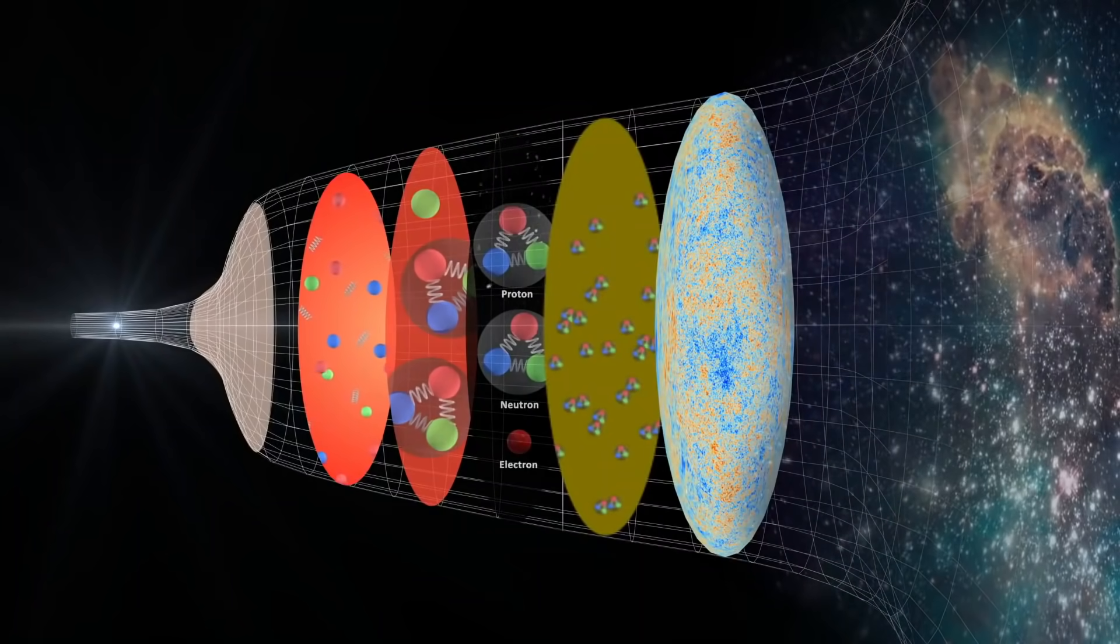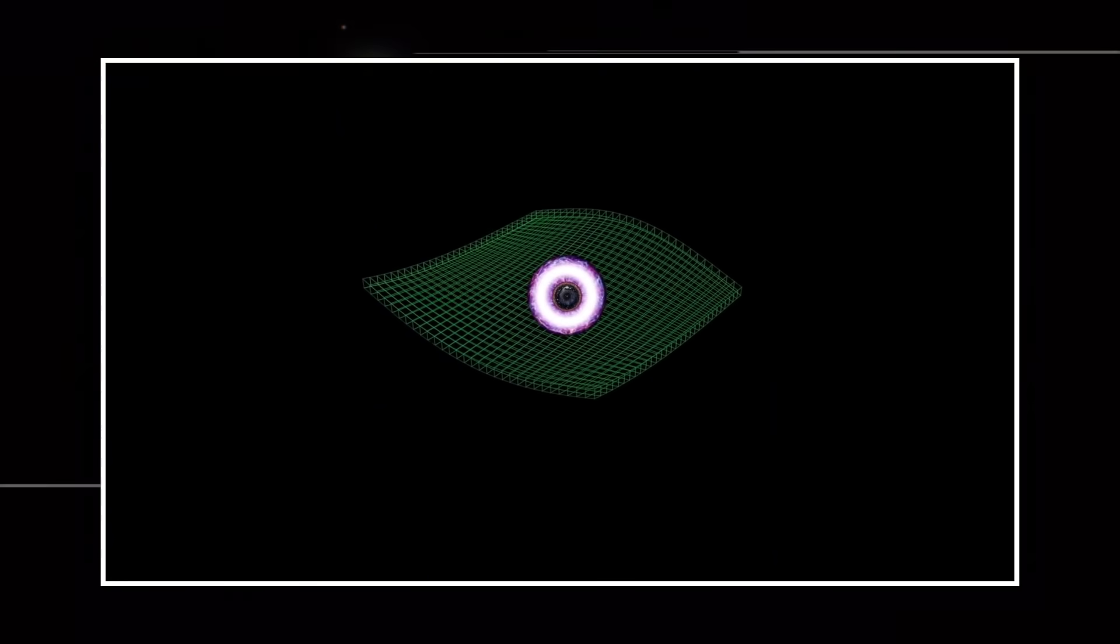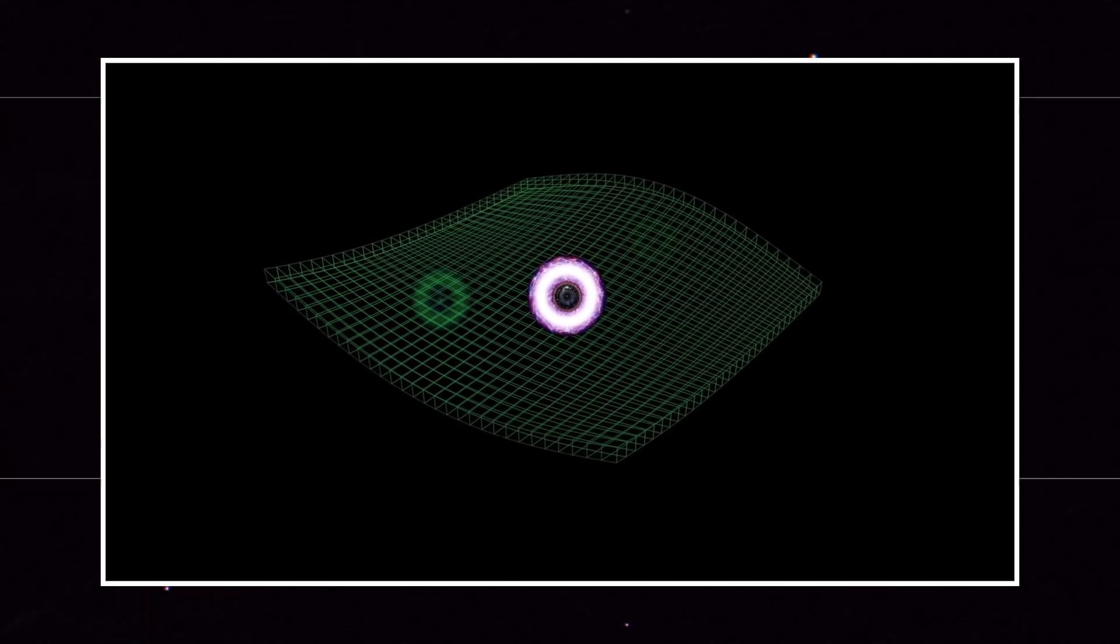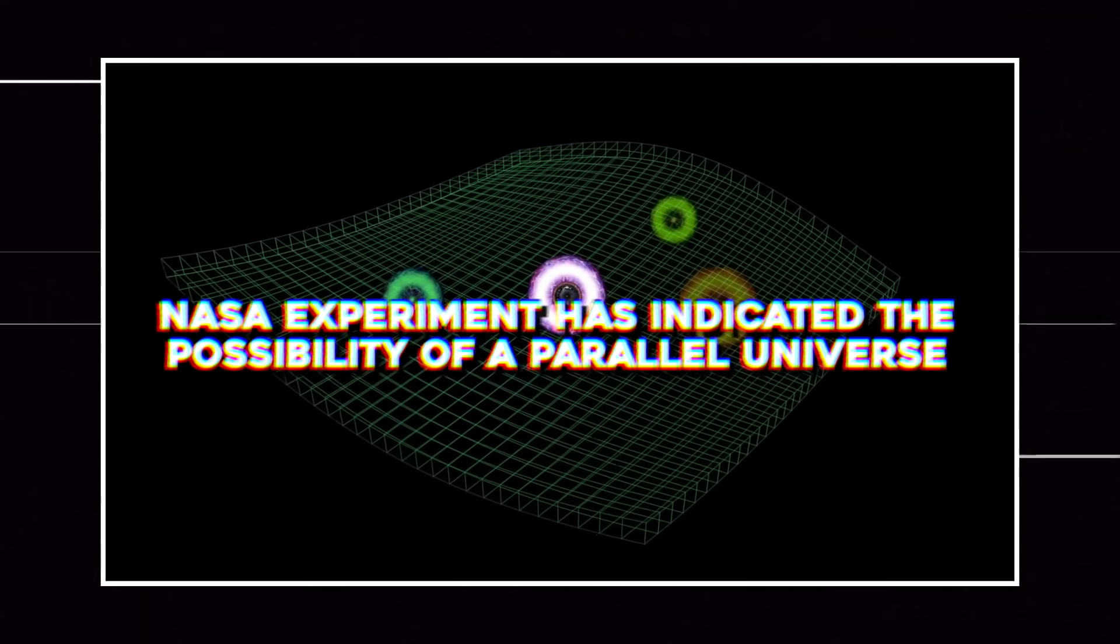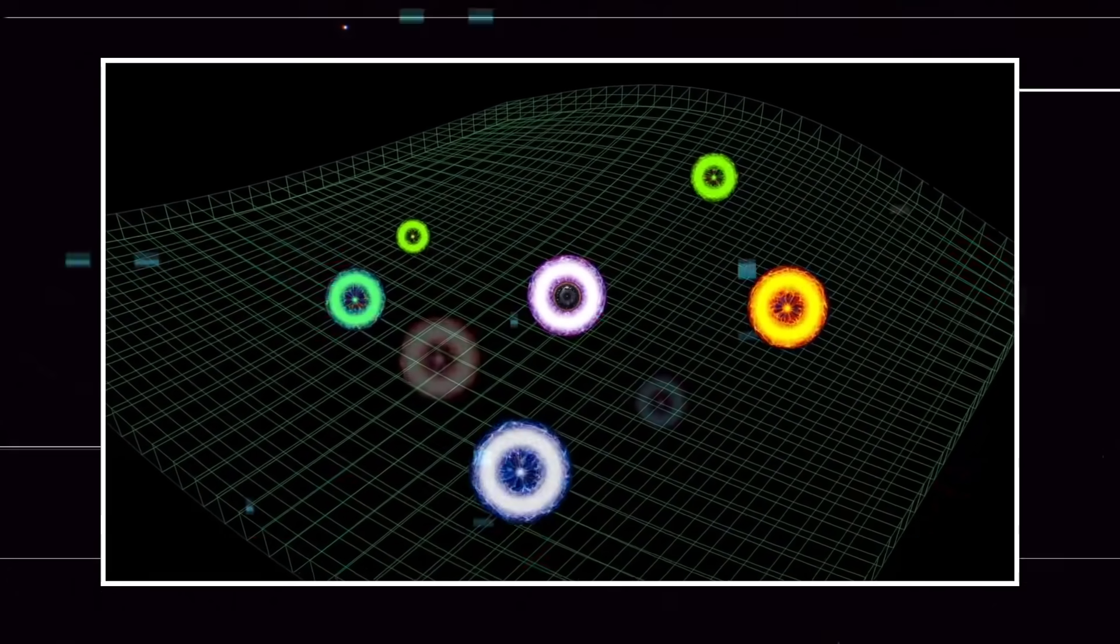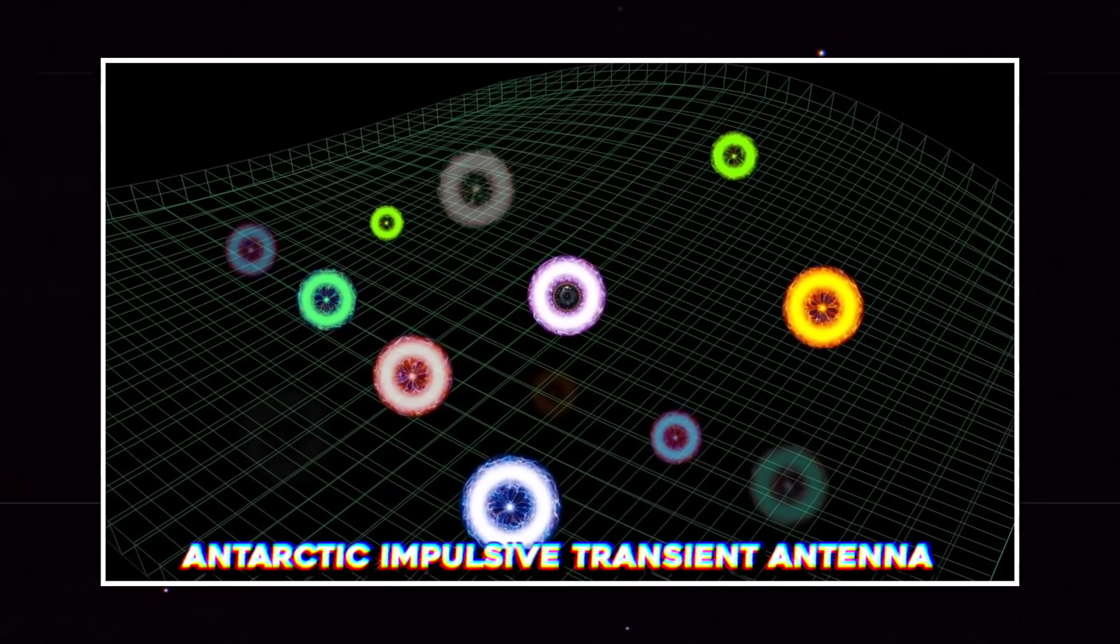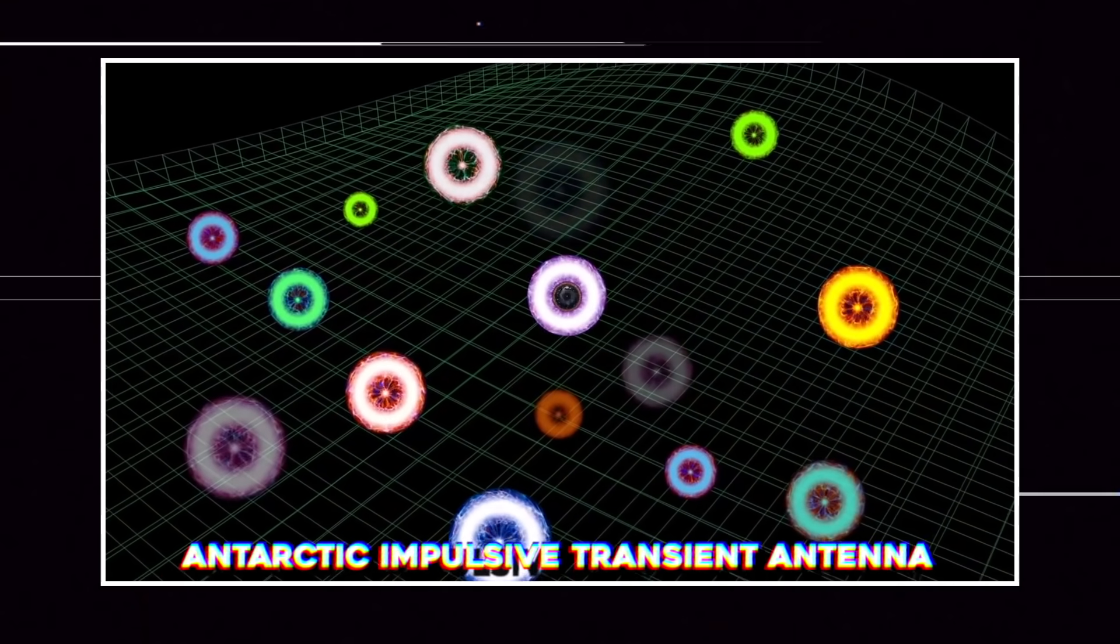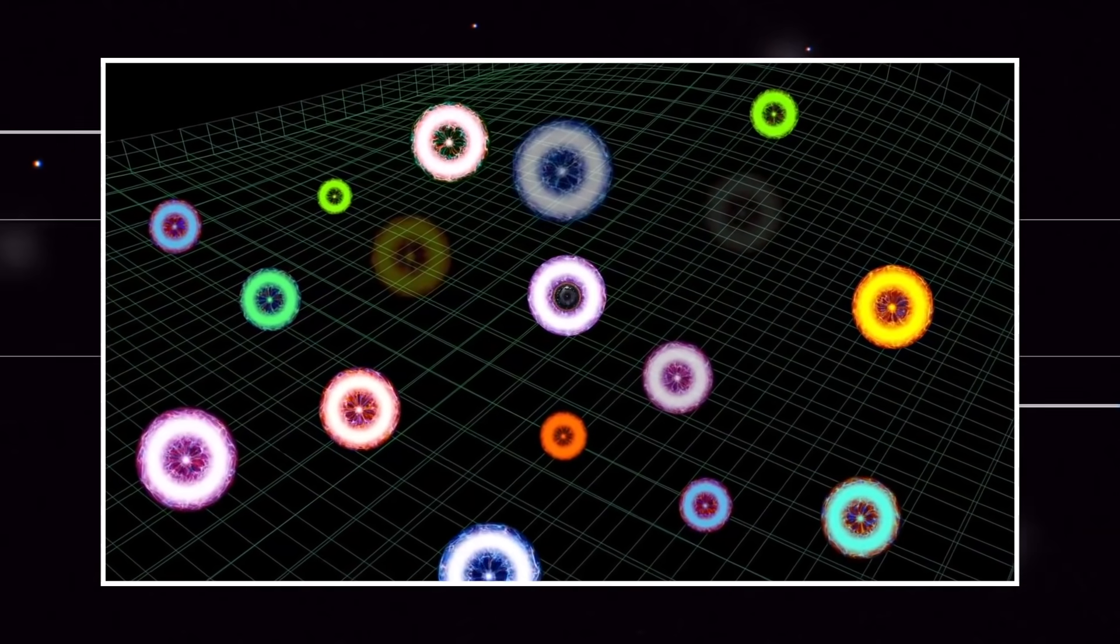These other bubble universes could have migrated away from us, well beyond our ability to observe. It might have been away from our ability to observe, but not anymore. When news broke out and created headlines across the world that a NASA experiment has indicated the possibility of a parallel universe, Antarctic Impulsive Transient Antenna, or ANITA, also suddenly came into the limelight.